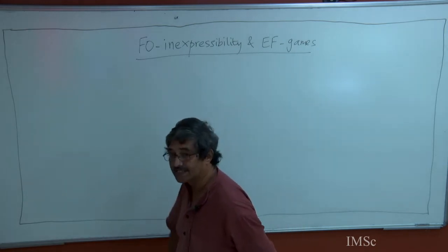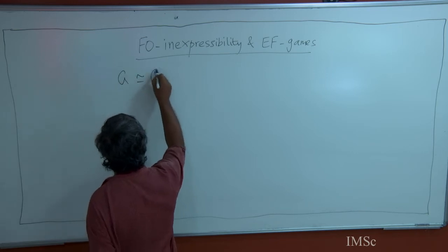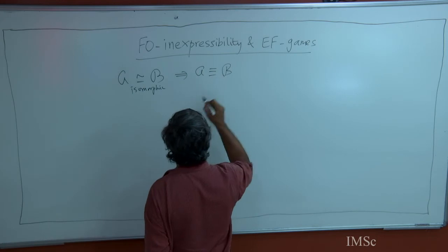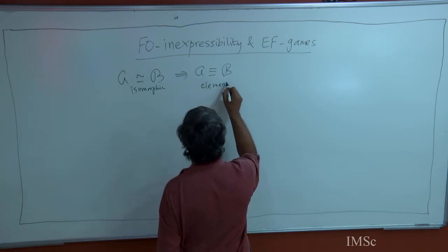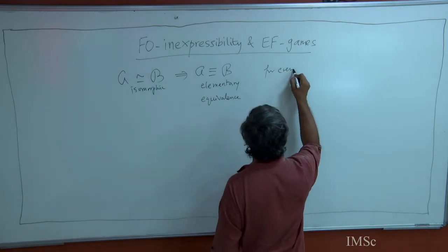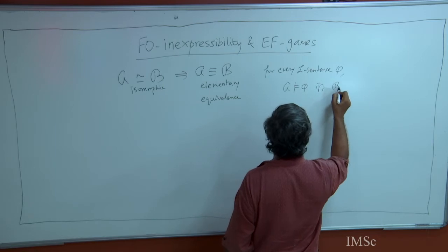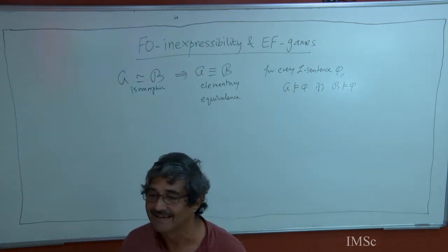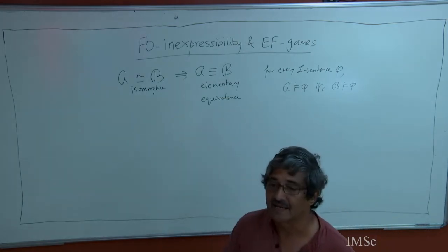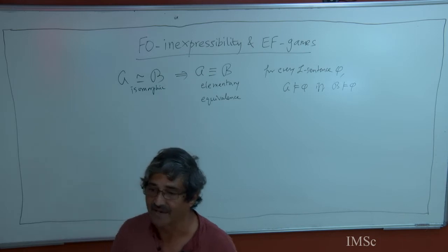Last time we talked of elementary equivalence. We defined isomorphism, and then we said this is the idea of elementary equivalence: for every sentence, elementary equivalence says that the sentences of the logic cannot distinguish the two structures. And of course, if two structures are isomorphic they satisfy the same sentences.